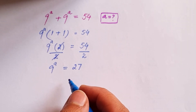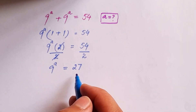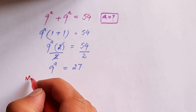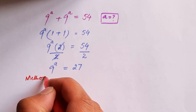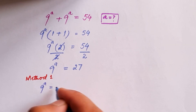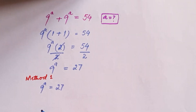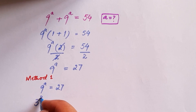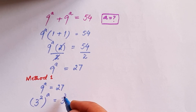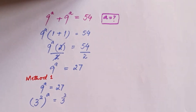We are going to solve this exponential equation using two methods, so you can choose any one you like. Here is method 1. We have 9 to the power a is equal to 27. We can write 9 as 3 to the power 2, because 3 times 3 is 9, so we have (3 to the power 2) whole to the power a, equal to 27, which can be written as 3 to the power 3.